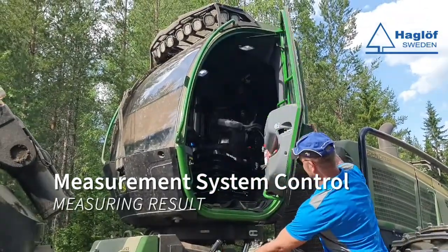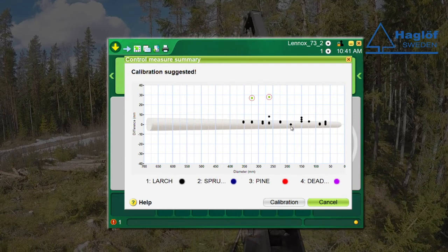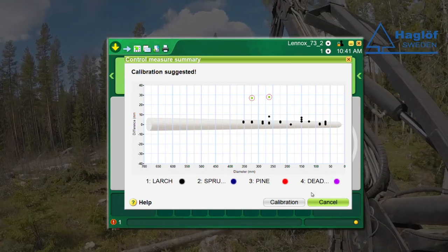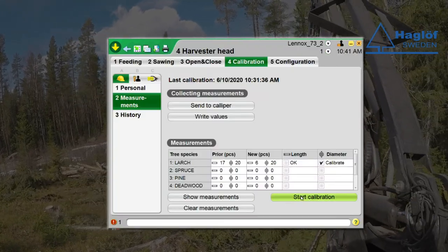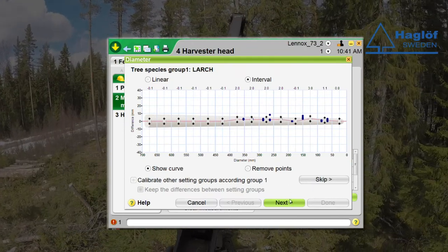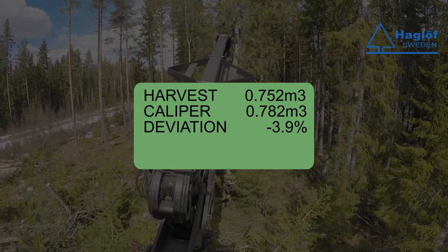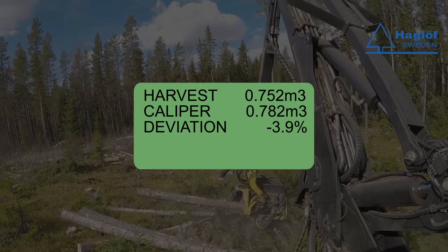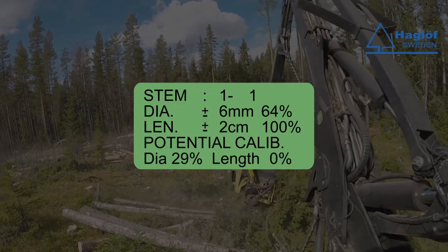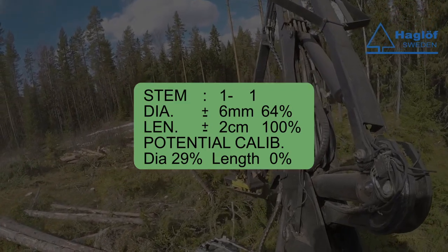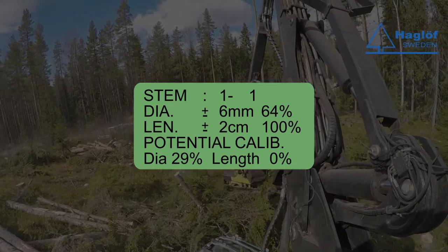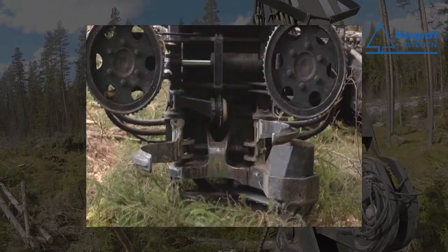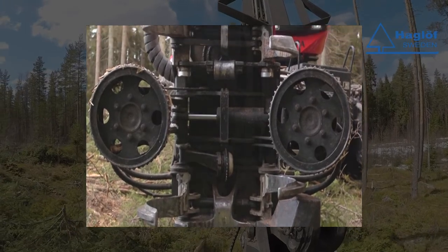When the control measurement is completed, a number of key figures from the caliper data are calculated that show whether the machine-measured length and diameter are as correct as possible. You can also look more closely at the results on a computer. If the key figures show that the machine is measuring poorly, it may be because some component of the measurement system is broken or missing, or the measuring system may need to be calibrated. The result volume shows the differences in machine-measured volume and control-measured volume. Note that it can be misleading to judge whether the machine measures well based on volume comparison alone, as length and diameter deviations can cancel each other out. The calibration potential result is more useful in determining whether a calibration can improve performance. If the calibration potential is zero or small, do not make a calibration based on caliper data. Do not calibrate if you know there is a mechanical fault on the machine, and never calibrate with a small amount of data — in normal cases, at least five trees per species are needed.